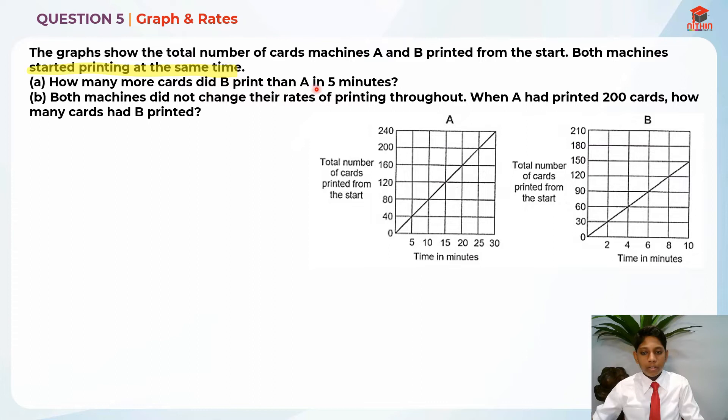For part A, how many more cards did B print than A in 5 minutes? First of all, let's find how many did A print in 5 minutes. The X axis is time in minutes and Y axis is total number of cards printed from start. So in 5 minutes, the connecting point over here, so A actually printed 40. So A printed 40 cards in 5 minutes.